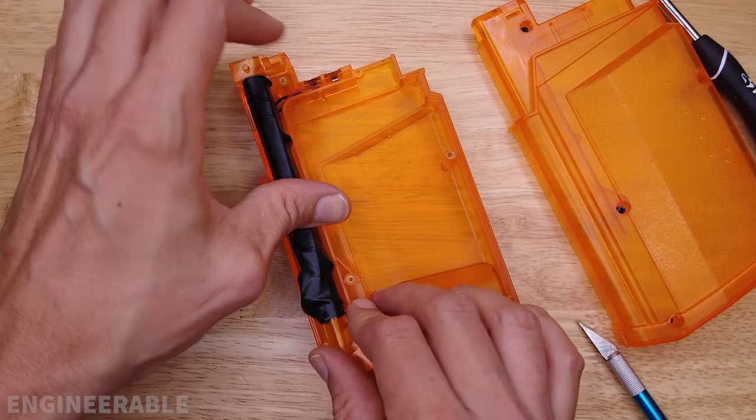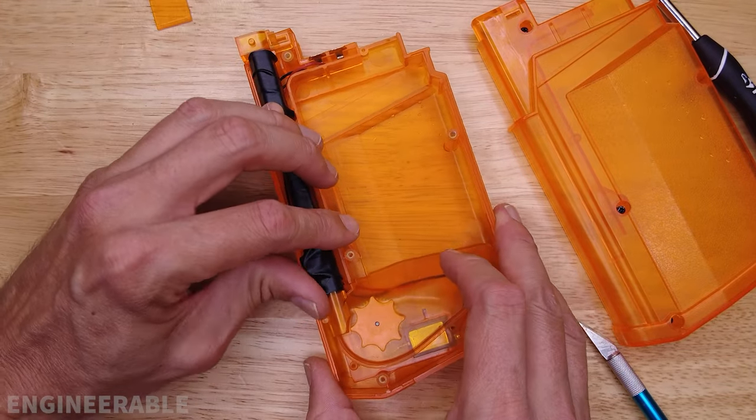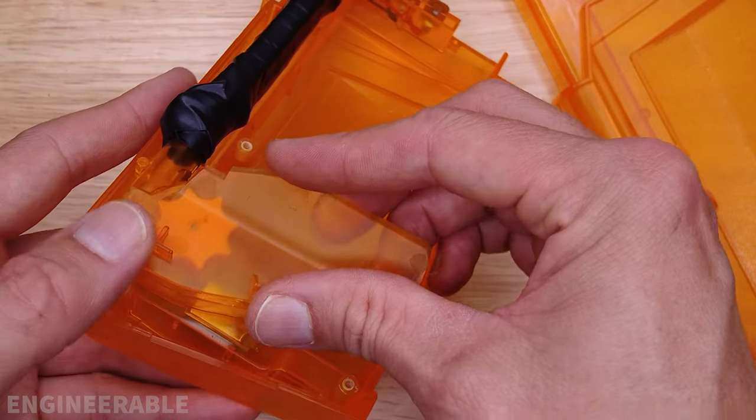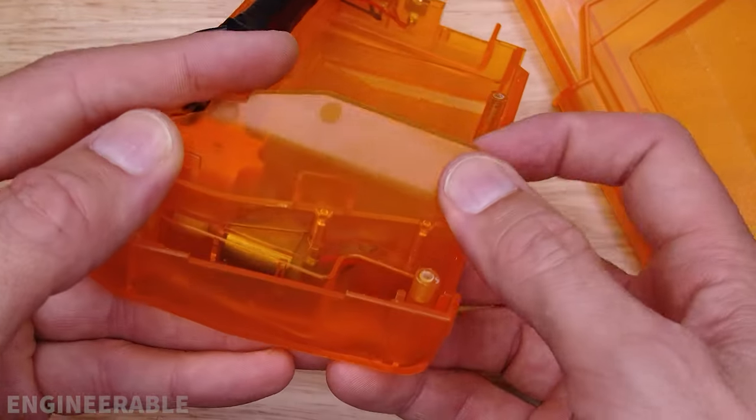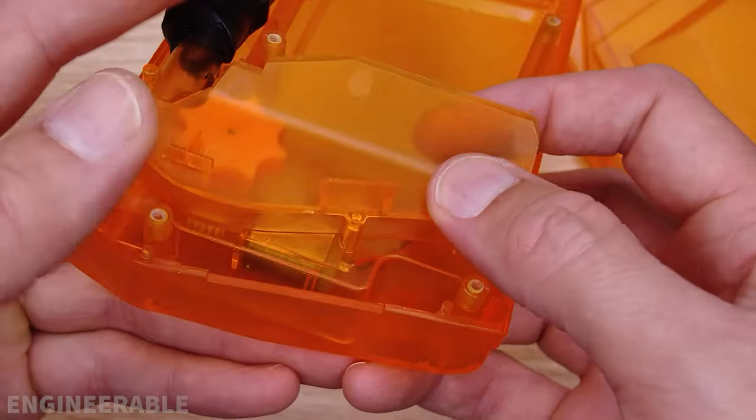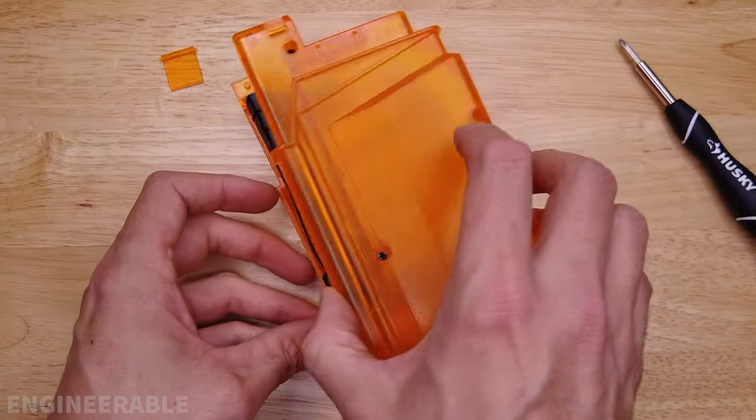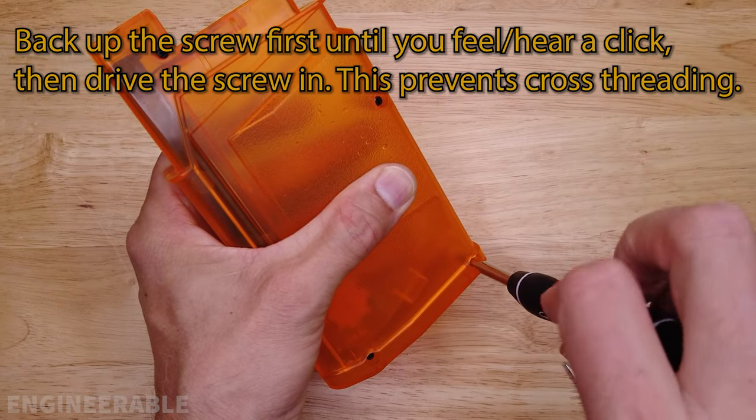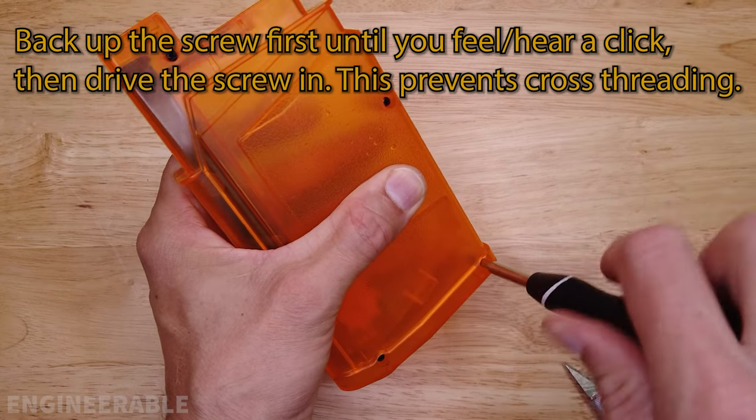Now we can put the feed tube back in place. Hopefully everything fits. Put the drive gear cover plate back on. Make sure those pins line up and put this cover back on. I'm going to tighten the bottom screw first so I can put the hopper door back in.